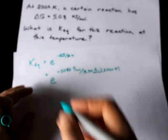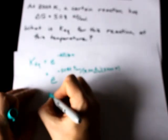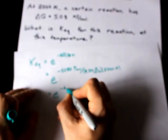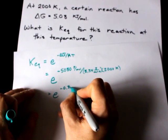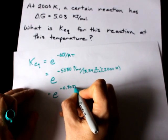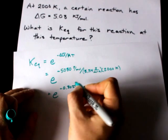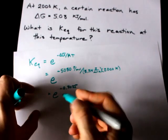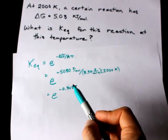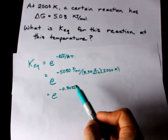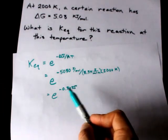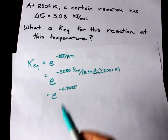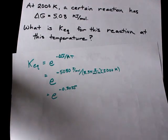So what I have here is e to the power of negative 0.3055. I like lots of decimal places on this number because a small difference in the exponent makes a big difference in your KEQ later.